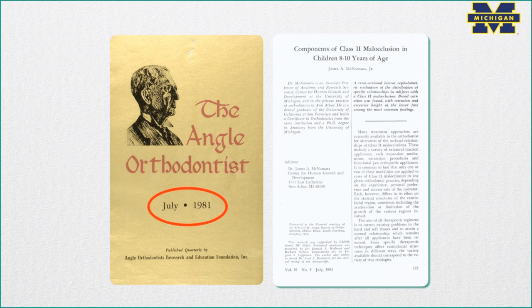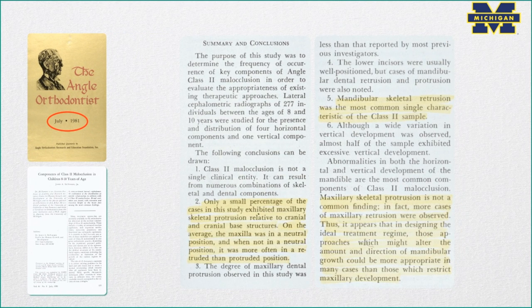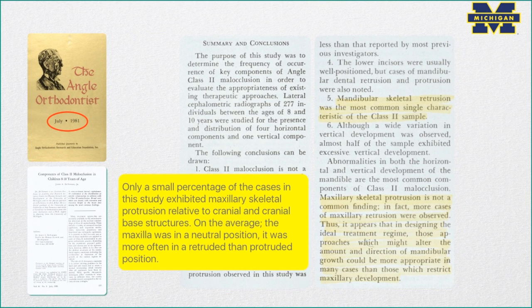Let's go back to the literature of 1981 and talk about Class II malocclusion. Dr. James McNamara, one of the most famous orthodontists in the world from the University of Michigan, did this study. He found that only a small percentage of cases exhibited maxillary skeletal protrusion relative to cranial-based structures. On average, the maxilla was in a neutral position — more often in a retruded than protruded position. In reality, if you look at these patients today with modern diagnostic criteria, you'll find that virtually all Class II patients have the maxilla too far back.